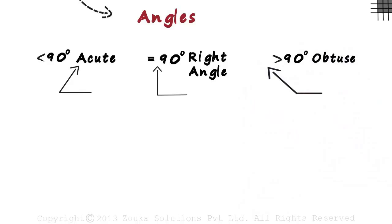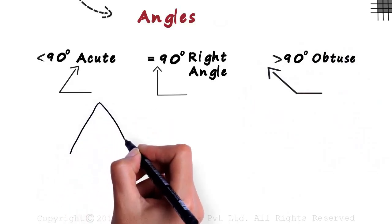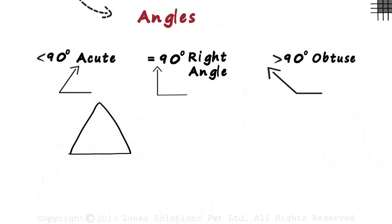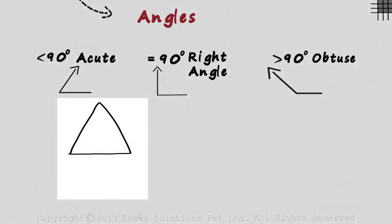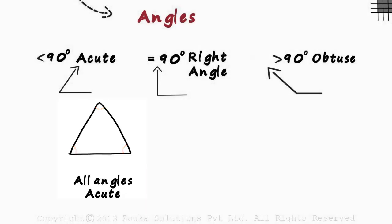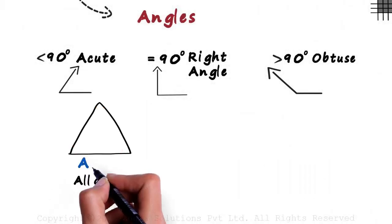Here's the good news — triangles are also classified in a similar way. Look at this triangle. All the angles inside are acute. Any guesses on what such triangles are called? Yes, acute triangles.